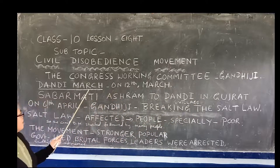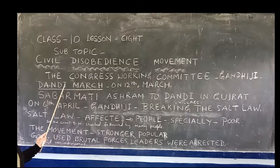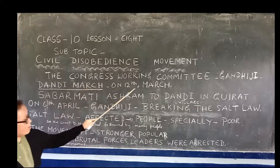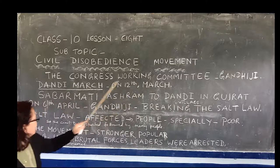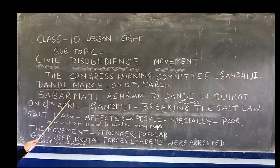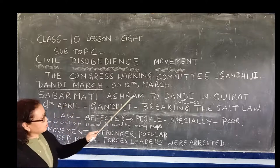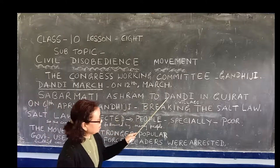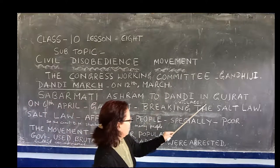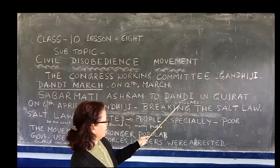So Gandhiji started a march known as the Dandi March on 12th March. Gandhiji started this march followed by many people from Sabarmati Ashram to Dandi, which is in Gujarat.